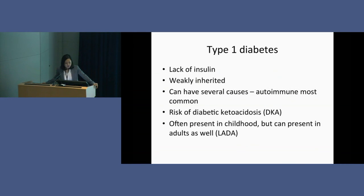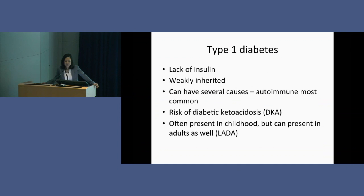Type 1 diabetes is a lack of insulin and it's actually very weakly inherited. If your father has type 1 diabetes, your chance of having it is probably between 2 and 6% — not very high, though it's commonly believed to be strongly inherited. The most common cause is autoimmune: the body attacks the insulin-making cells and breaks them down. There is a risk of a condition called diabetic ketoacidosis from lack of insulin, which doesn't occur with type 2 diabetes as often. Presentation is usually in childhood, but it can occur for the first time in adulthood — I've seen it in people in their 60s and above, which we call latent autoimmune diabetes of the adult, though it's essentially a similar process.